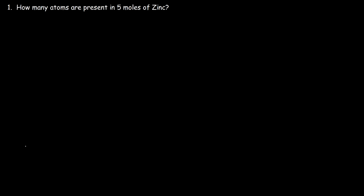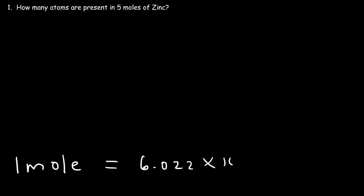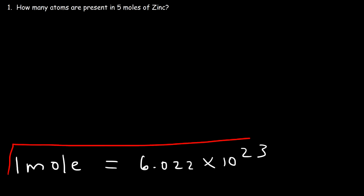Avogadro's number is basically a conversion between moles and atoms. One mole is equal to 6.022 times 10 to the 23. That's the conversion — so one mole of zinc is equal to that many atoms.